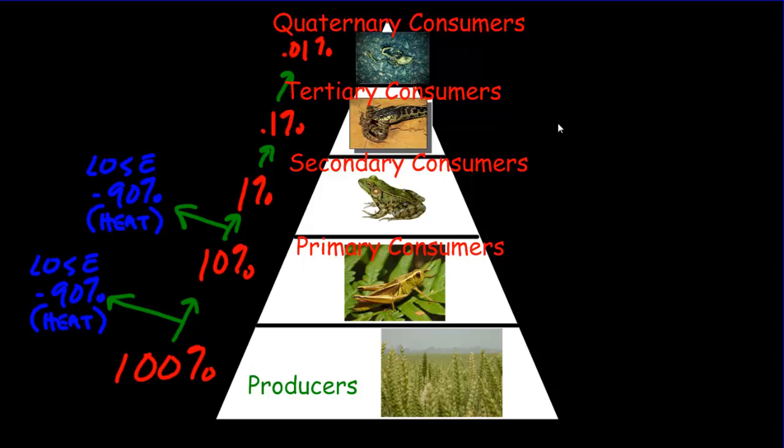There is zero energy left at the peak after the quaternary consumers are finished. We call this the 10% rule, or the 90% lost rule. In each transfer, either 10% is available or 90% is lost — however you prefer to look at it. That's where we'll end this mini lesson on trophic levels, food webs, food chains, and the relationships we can extract using the trophic level pyramid.